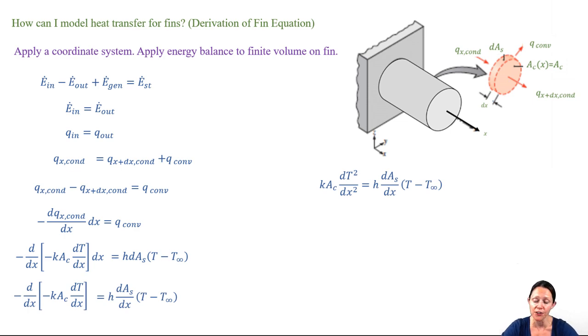And now I just divide through by x, and since k and the cross-sectional area are constants, they just come out of the derivative. I also realize that I can define the perimeter as dAs divided by dx. And now I have my governing equation.